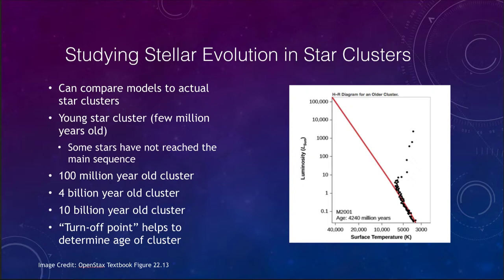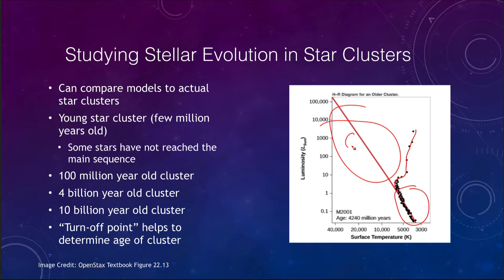A slightly older cluster — around 4 billion years old, about the age of the sun — shows all stars having reached the main sequence on the lower portion, but no stars remaining on the upper main sequence; they have all gone through their lives. A star like the sun, at this stage, would just be getting ready to evolve off the main sequence.